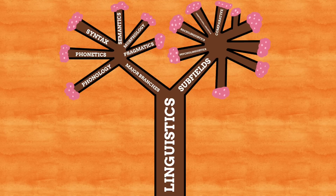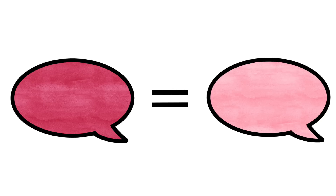There's also comparative linguistics, which is more or less what it sounds like — we study and compare two languages to one another to figure out their similarities. It's used to figure out how languages relate to one another, like how all the languages of Proto-Indo-European connect to each other.